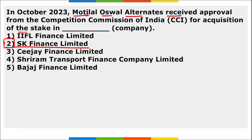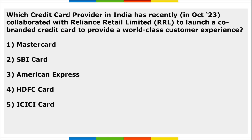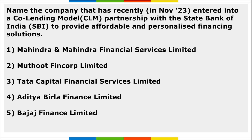HSBC India became the first foreign bank in India to offer electronic bank guarantees (EBGs). These are paperless bank guarantees similar to traditional paper bank guarantees, issued by the bank to a beneficiary on behalf of an applicant — a promise to pay if the applicant fails to fulfill an obligation.